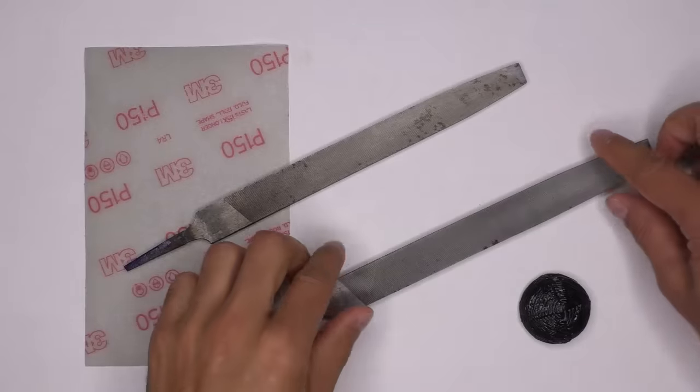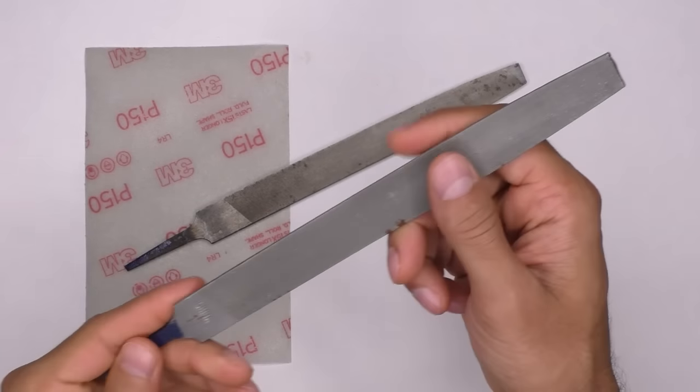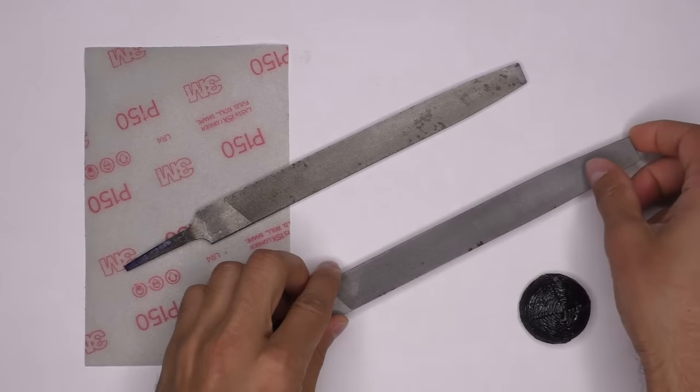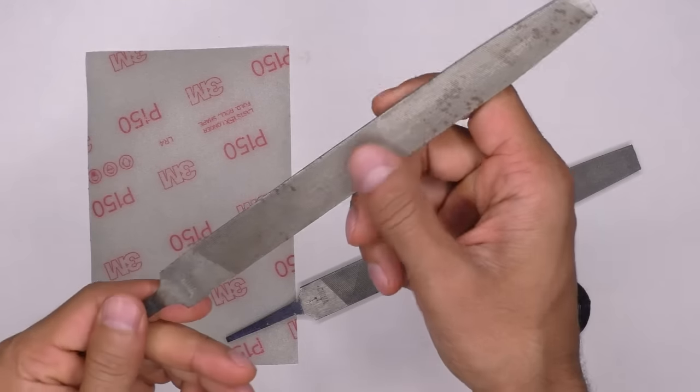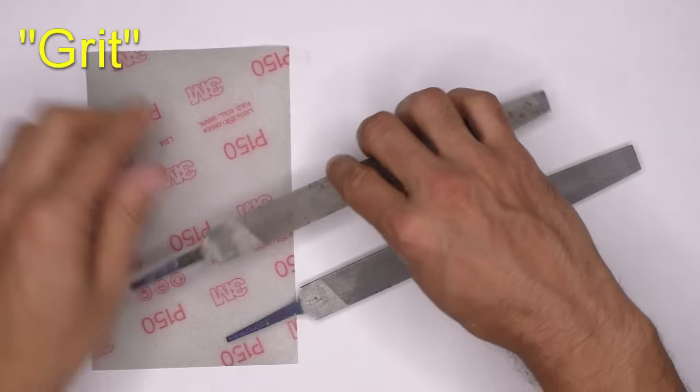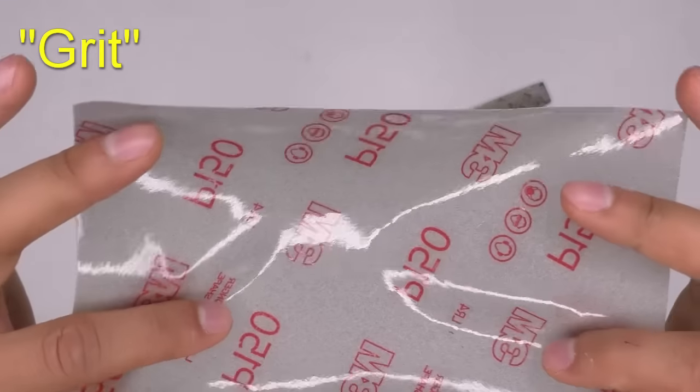For sanding, we can use various types of files and sandpaper. Here you can see two different roughness files. The rougher the file, the more material will take off. Same for sandpaper. You can have different grits of sandpaper, which mean different roughness levels. The lower the grit, the rougher the sandpaper, and the more it will take off.